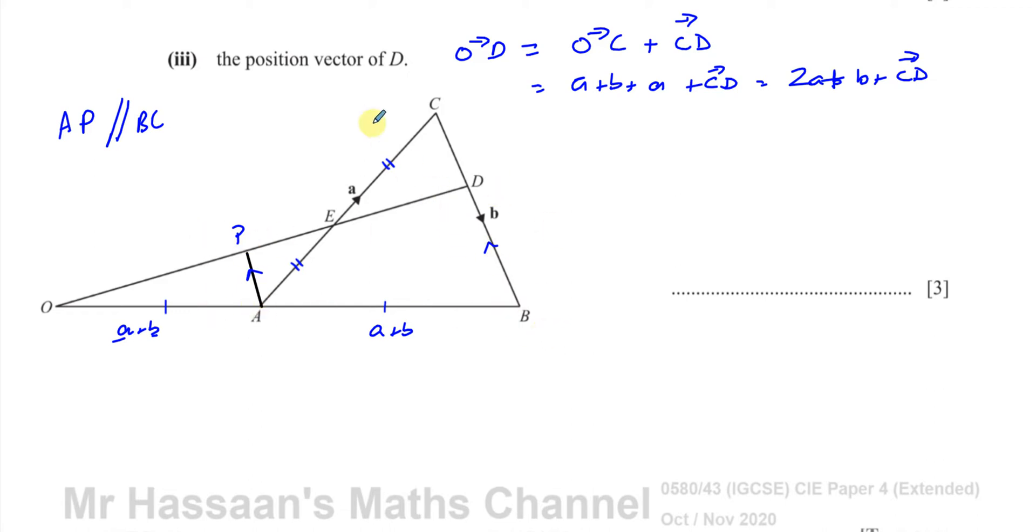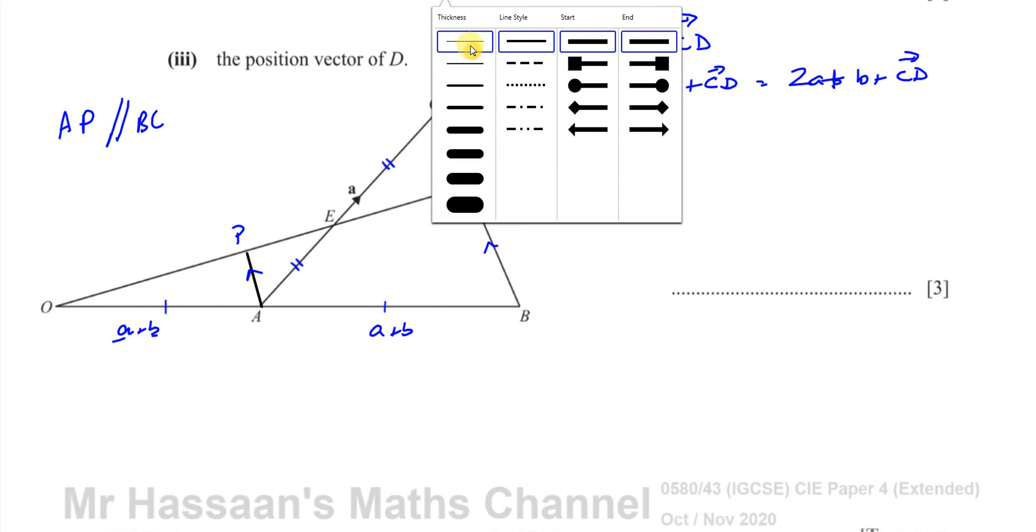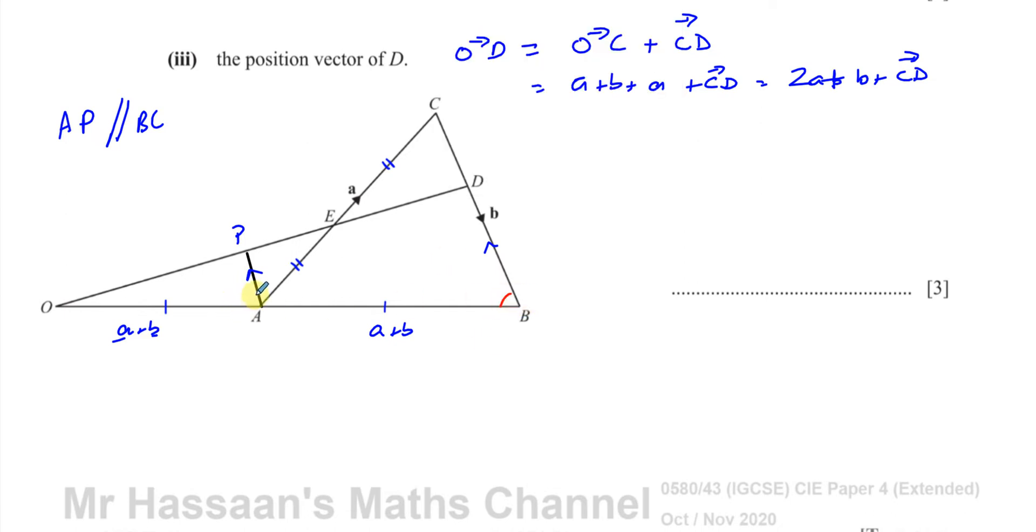If those are parallel lines, then what I can say is that these angles here, for example, this angle here, is the same as this angle here. Because they are corresponding. These parallel lines make this F shape. As is this angle the same as this angle. Okay, which means that these two triangles, we can say the triangle ODB. We can say the triangle ODB is similar to OAP. They're similar triangles. Okay, because you can say by angle, angle. Two angles are the same in both of them.